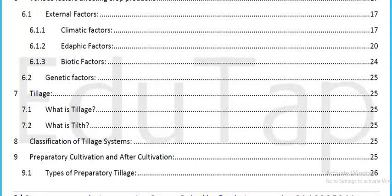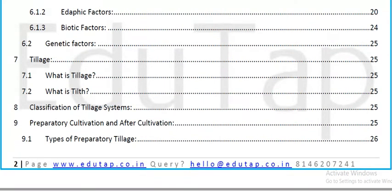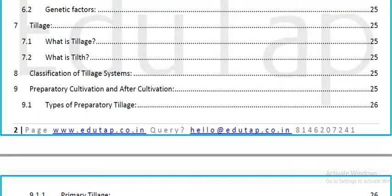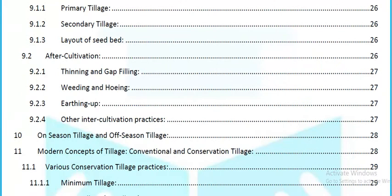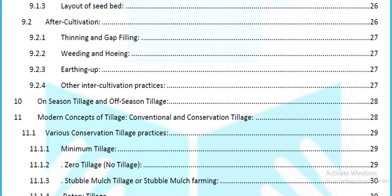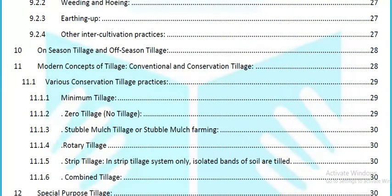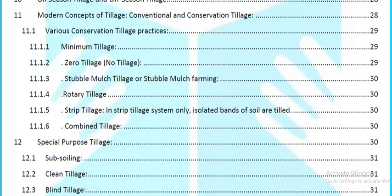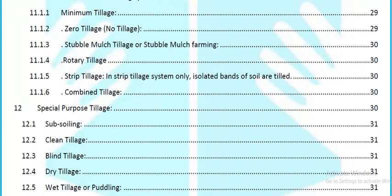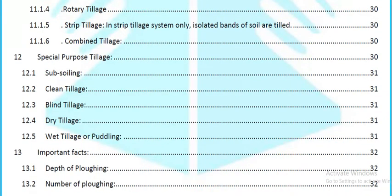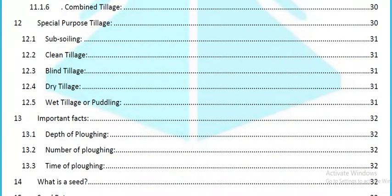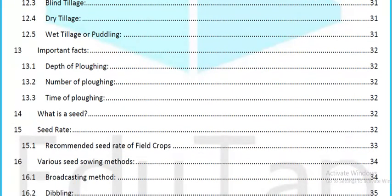Various factors affecting crop production include external factors like climatic factors, edaphic factors, biotic factors, and internal factors like genetic factors. Tillage — what it is, its classification, tillage systems, preparatory cultivation, after-cultivation, types of tillage (primary, secondary), layout of seedbed, after-cultivation thinning, gap filling, earthing up, other inter-cultivation practices, on-season tillage, off-season tillage, and modern concepts of conventional and conservation tillage — minimum tillage, zero tillage, stubble mulch tillage, rotary tillage, strip tillage, combined tillage, special purpose tillage, subsoiling, clean tillage, blind tillage, dry tillage, wet tillage or puddling.